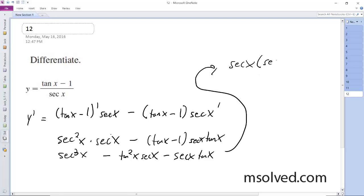So secant squared x minus tangent squared x, or tangent squared x.